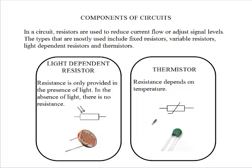Now let's look at their symbols. A light-dependent resistor has a rectangle with two lines bounding it, and then arrows pointing to the resistor, signaling light. With a thermistor, we have the rectangle with the two lines bounding it, a diagonal line, and then a horizontal line under the diagonal line. So a thermistor provides resistance that is based on temperature.